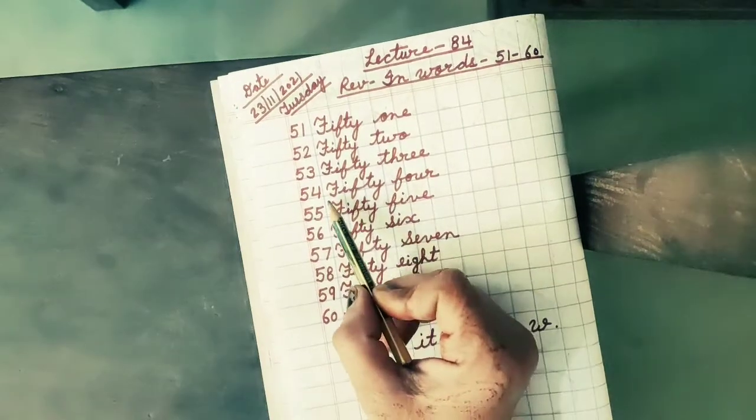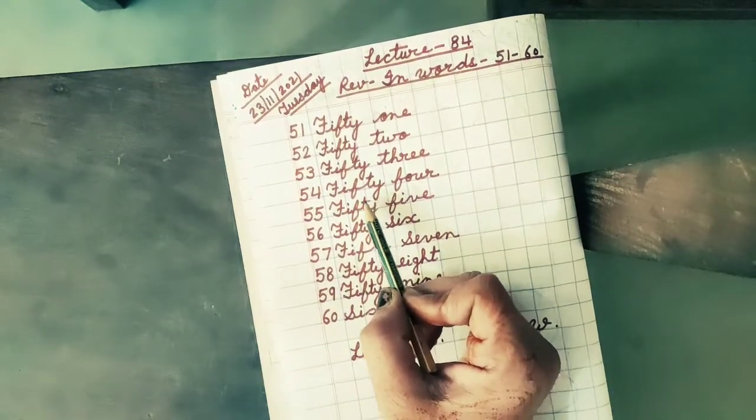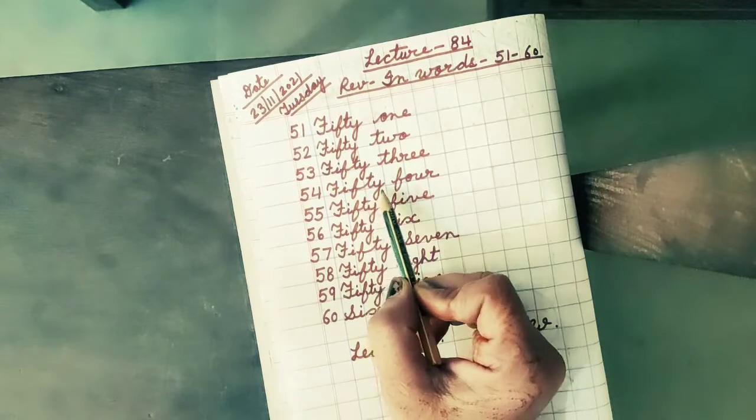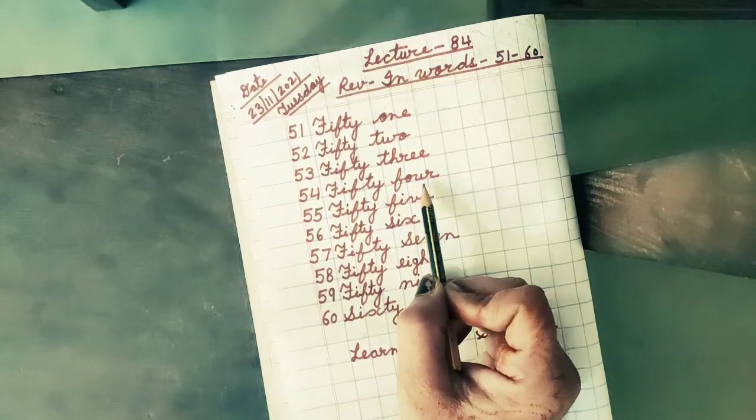Next number is 54. The spelling of 54 is F, I, F, T, Y, 50, F, O, U, R, 4.